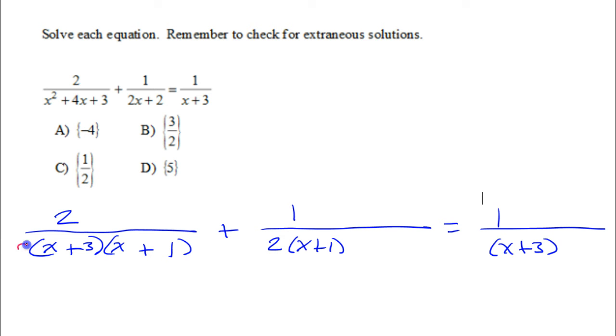So I'm going to put a 2 in the front, which is okay as long as I multiply the numerator by 2 as well. Now in the next denominator, it has a 2 and an x plus 1, but it doesn't have an x plus 3. So I'm going to put an x plus 3 in the numerator and the denominator.